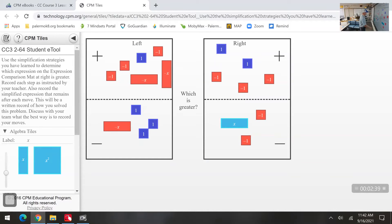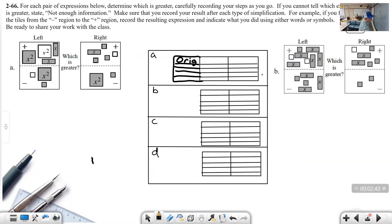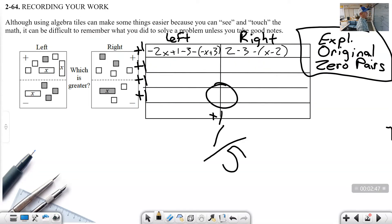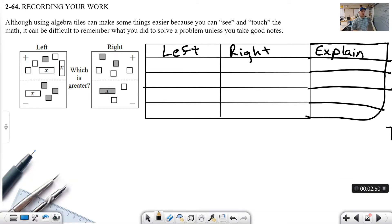So I'm going to go ahead and open the E-tool. What we're going to do is we are going to record some of our work as we go. Now in the top row, there we go, now we're all set. The first thing we're going to do is we're going to write what we see. So on my left hand side I see negative 2x plus 1 minus 3 minus parentheses negative x plus 3 close parentheses. On the right I see 2 minus 3 minus parentheses x minus 2, and that is the original.